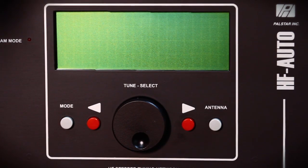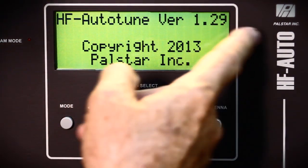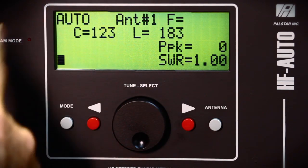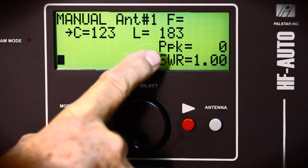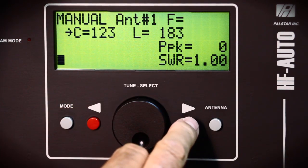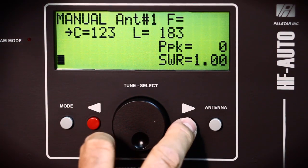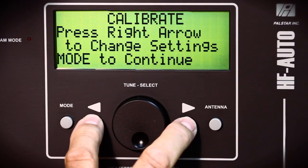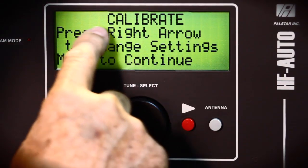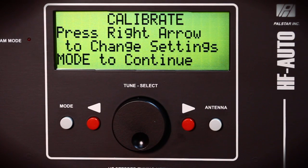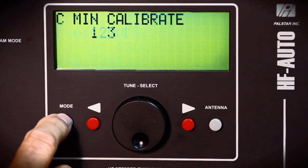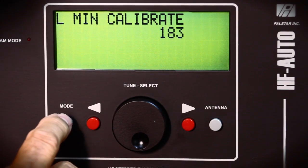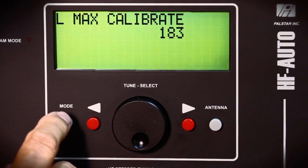You turn on your HF Auto. It reads 1.29 and it comes into auto mode. You push the mode button once and it goes into manual mode. And you push the right hand red button and the left hand red button simultaneously and hold until it goes into the calibrate mode.